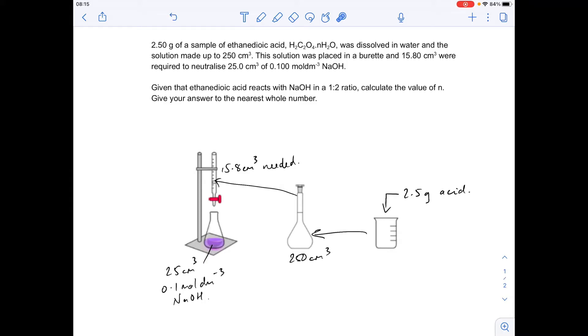So we've dissolved 2.5 grams of this acid into some water in a beaker. That's gone into a volumetric flask, 250 cm³, and then that has then gone in to fill up the burette. It's been titrated against 0.1 mole per dm³ sodium hydroxide solution. 25 cm³ of that was used, and the average titrate was found to be 15.8 cm³ of the acid. We're also told that the ratio in the reaction is 1 to 2. So one mole of ethanedioic acid reacts with two moles of sodium hydroxide.